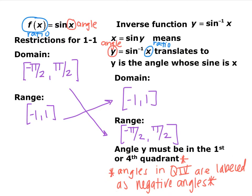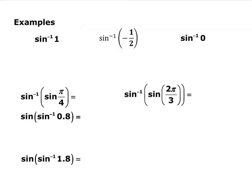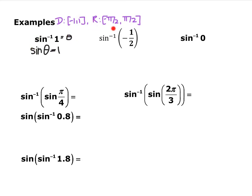Angles in the fourth quadrant are listed by their negative angle instead of their large positive angle. For example, sine inverse of 1: we're asking sine of what angle equals 1? There are an infinite number of answers, but because we've restricted the range to negative π/2 to π/2, the only answer in that range is π/2.